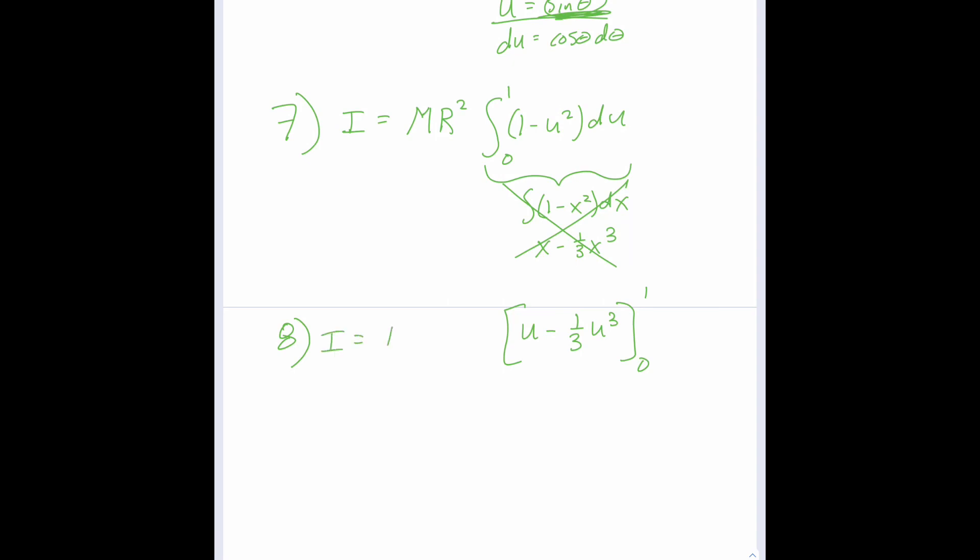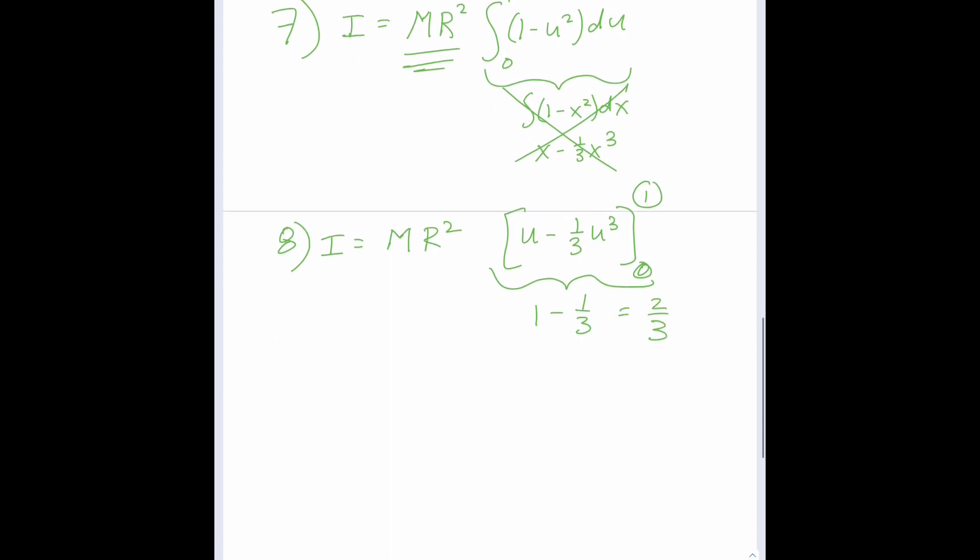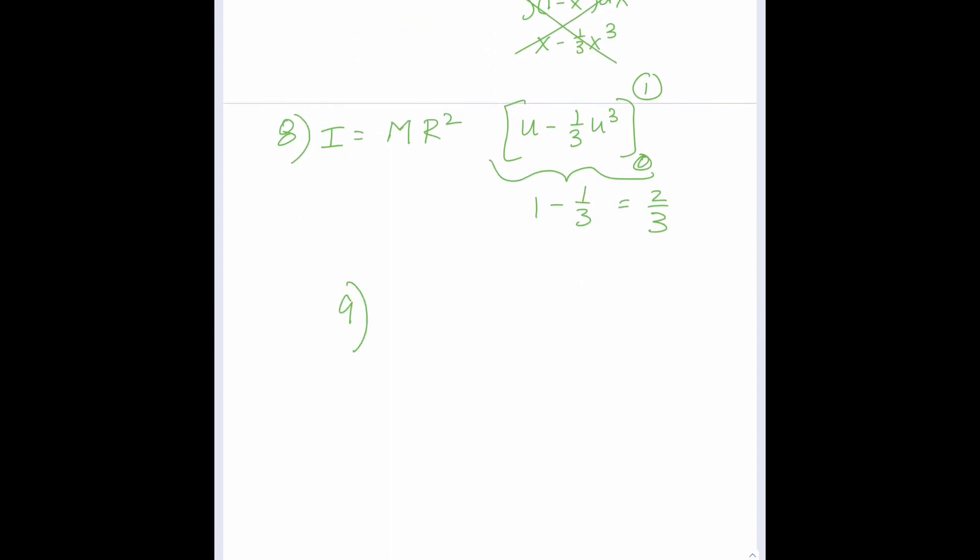So I is equal to Mr² times whatever this evaluates to. So the upper limit of 1, this gives us 1 minus 1/3, and the lower limit of 0 just gives us 0. And 1 minus 1/3 is 2/3. Oh, there it is! Hey, we reached the final step and we got exactly what we said we would get: I equals 2/3 Mr² for a hollow sphere, otherwise known as a spherical shell.